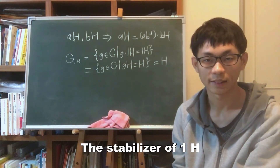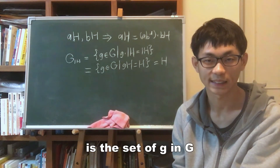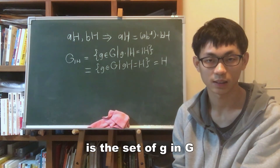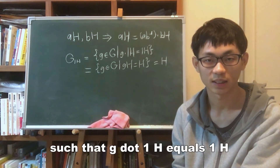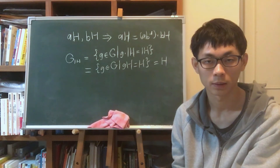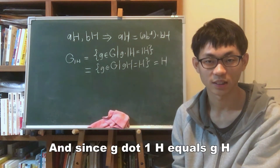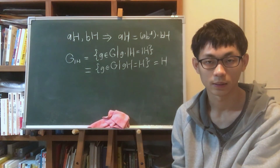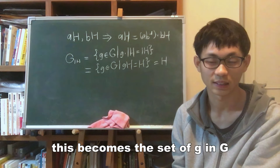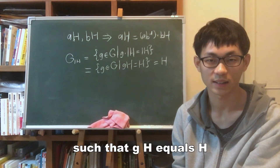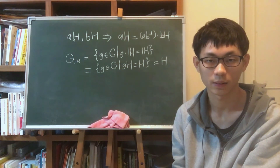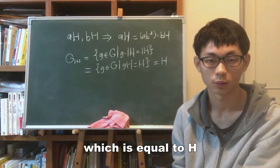The stabilizer of 1H is the set of g in G such that g · 1H = 1H. And since g · 1H = gH, this becomes the set of g in G such that gH = H, which is equal to H.